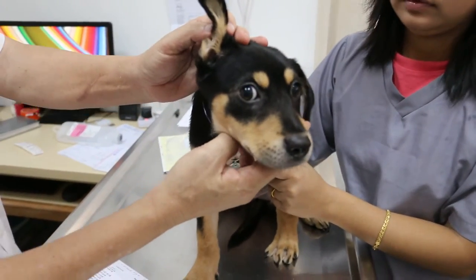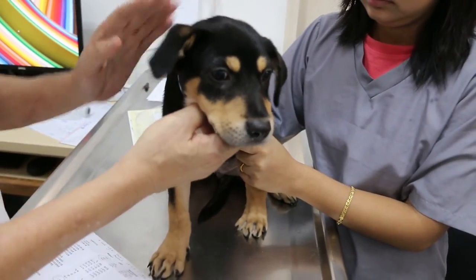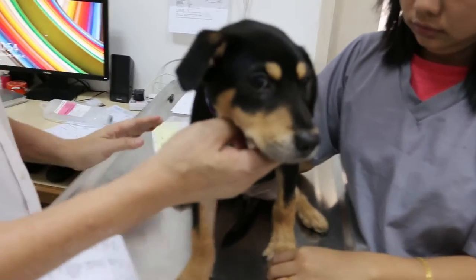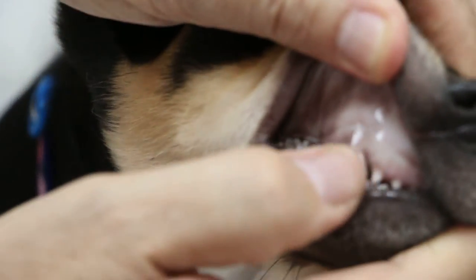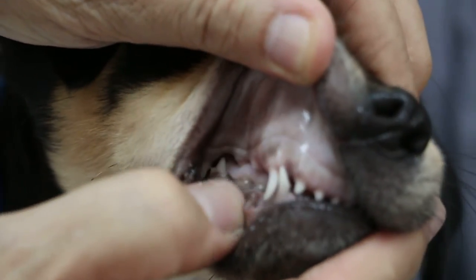This puppy, about three months old, came in one week ago with not eating for three days and the gums were so white, were very white at that time.